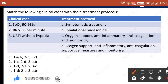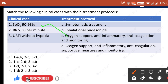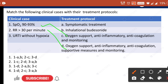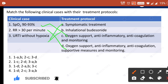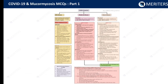The next question is: match the following clinical cases with their treatment protocols. If SpO2 is 90–93%, the treatment protocol includes oxygen support, anti-inflammatory, anti-coagulation, and monitoring. When the respiratory rate is more than 30 per minute, oxygen support, anti-inflammatory, anti-coagulation, supportive measures, and monitoring are required. When upper respiratory tract infection without hypoxia is present, symptomatic treatment and inhalational budesonide are given — option B. A detailed chart helps decide whether the disease is mild, moderate, or severe and how the complete protocol should be followed for COVID-19 patients.